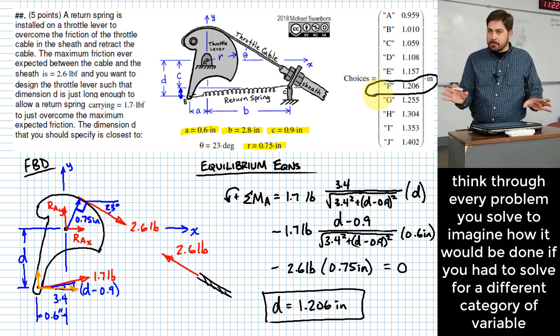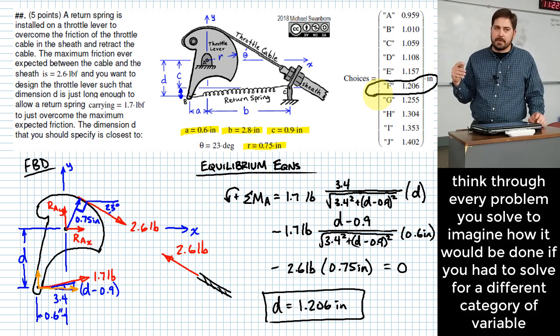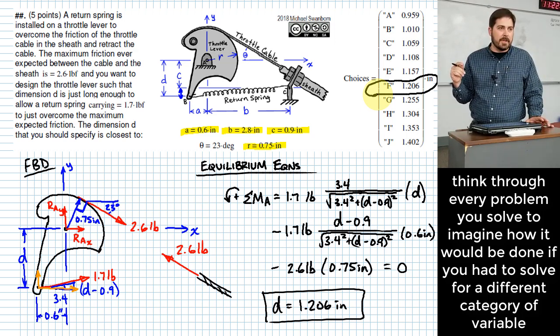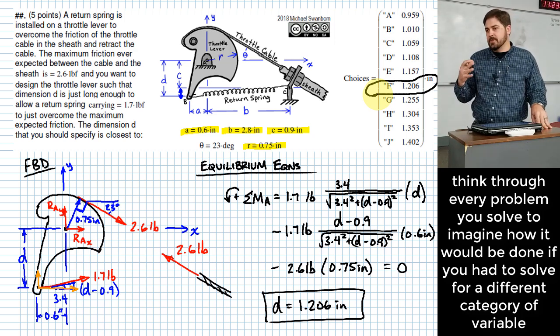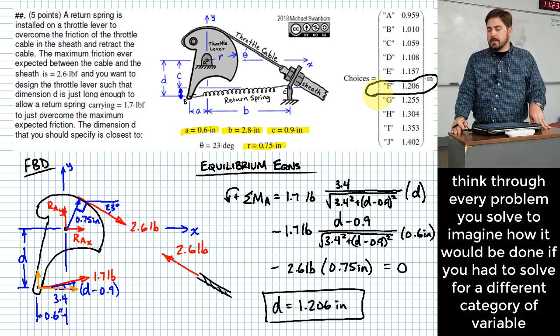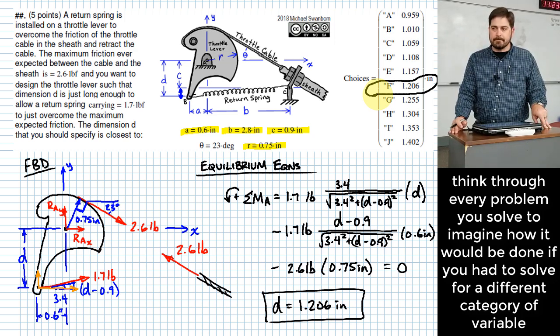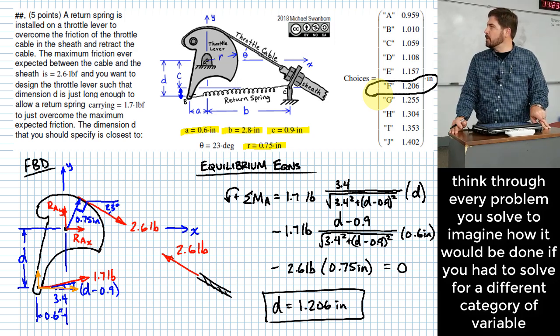So just to recap a little bit, there's nothing different about this problem other than the variable that you are solving for, right? This is probably not something you're used to have seeing, you're used to have been seeing maybe in your homework or whatever, solving for a different variable, but it's certainly something that's possible. Alright. Questions on this one?